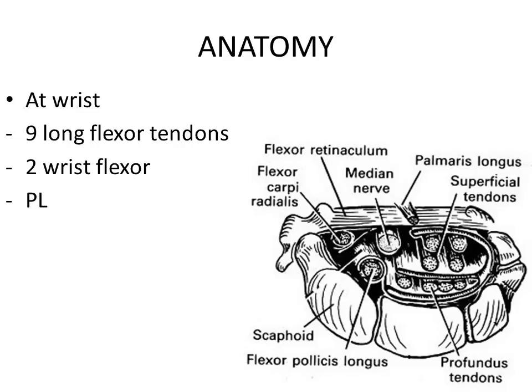For the tendons in the hand, they form an important structure to provide the animation of the fingers and digits. There are nine flexor tendons which traverse from the forearm through the carpal tunnel at the level of the wrist, and there are two wrist flexors and a palmaris longus, which is superficial to the carpal tunnel.